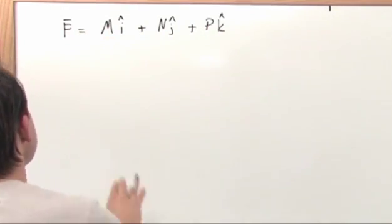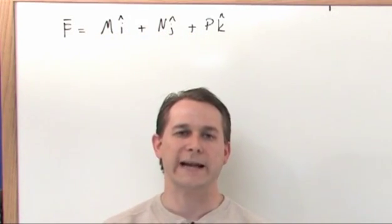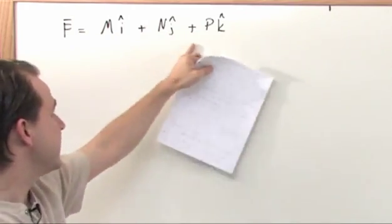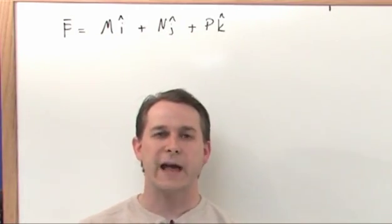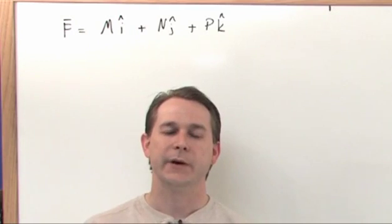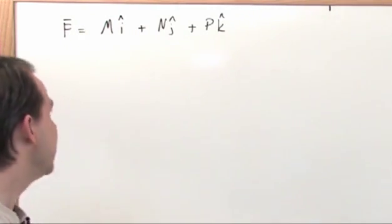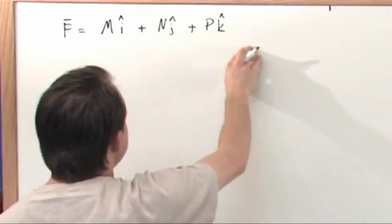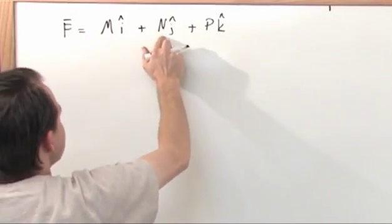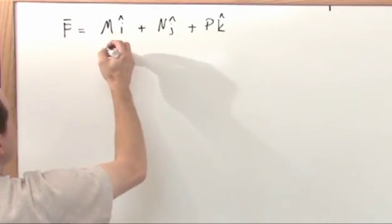This notation M, N, and P is only used because if you start writing out M as a function of X, Y, and Z, and N as a function of X, Y, and Z, and have everything written out in explicit detail, then you're going to have equations that are really big. So what they do is they just use this little notation to compact things a little bit because that way it's easier to write it down on your paper. But this is nothing different than the vector field you've already seen. It's just I'm using the letter M to represent whatever I write in front of I, N to represent whatever I write in front of J, and P to represent whatever I write in front of K.